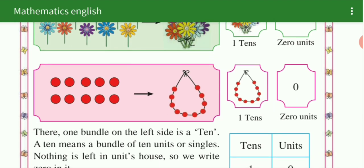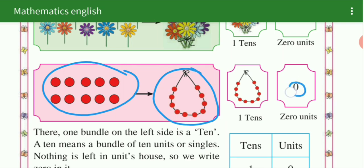See here, beads, there are 1 beads on the left side, left side is a ten. 1 bundle on the left side is a ten. See here, there are single 10 beads, 10 units. When these 10 units are tied together, they become what? Ten, 1 ten, and units how many? 0.